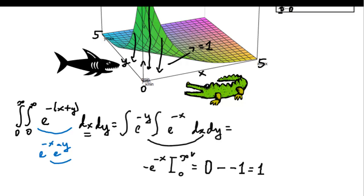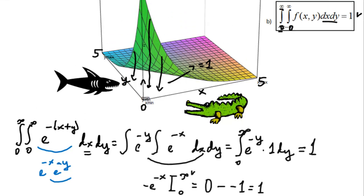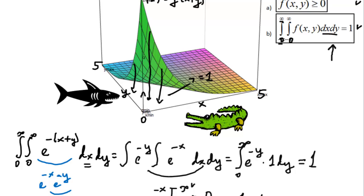Therefore, we've got e minus y times one dy. But we have already solved a similar case here, it's just the variable is different. So we know that this, this will also be one. So e to the power of minus y, integrated from zero to infinity, will be also one. Therefore, the whole expression evaluates to one. And we've got our second property proven, this one here. And therefore, for that reason, we are dealing with a valid joint probability density function.